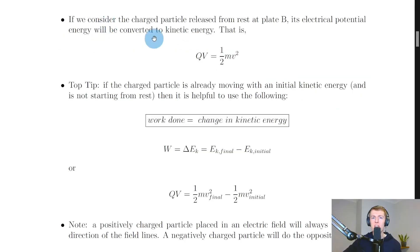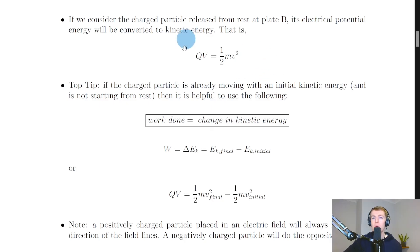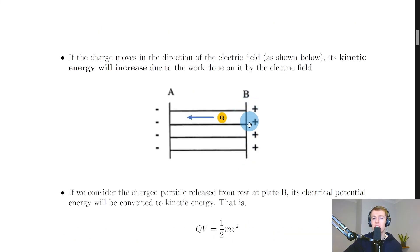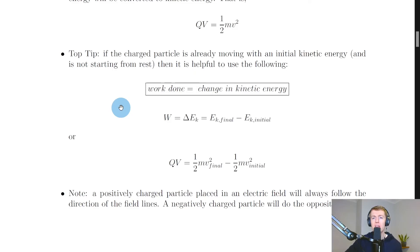If the charged particle is released from rest at plate B, its electrical potential energy will be converted to kinetic energy. We can equate the work done on the charged particle — equal to the change in electrical potential energy — to the kinetic energy: QV = ½mv². Note that we can only use this when the charged particle is starting from rest at one of the plates. It's a bit more complicated if the charged particle is already moving and not at rest to begin with.